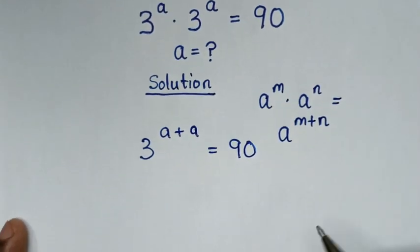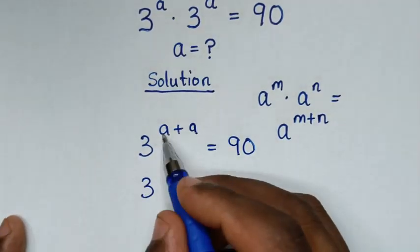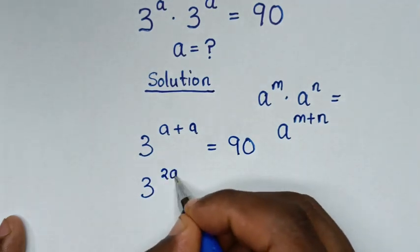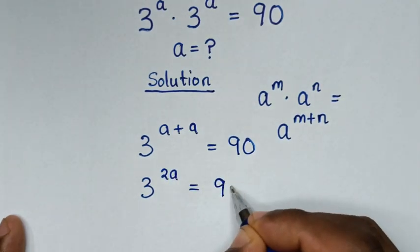Then in the next step, a plus a is 2a, so it will be 3^(2a) is equal to 90.